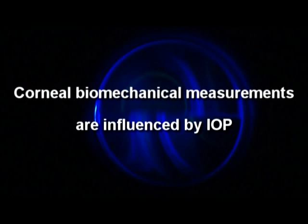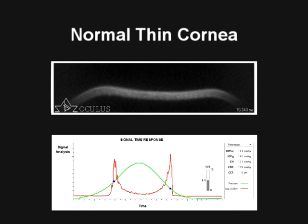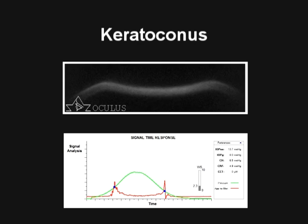We know corneal properties influence IOP measurements, and from this experiment we can also deduce that the opposite is true. Shown here is a normal, thin cornea measured on both the Corvis, shown at the top, and ORA, shown at the bottom. Note that the deformation is flat in shape, indicating that this cornea is relatively stiff.